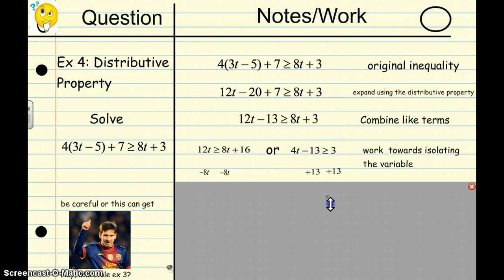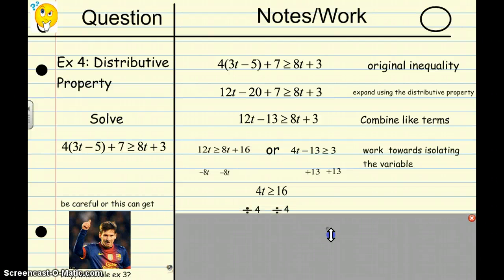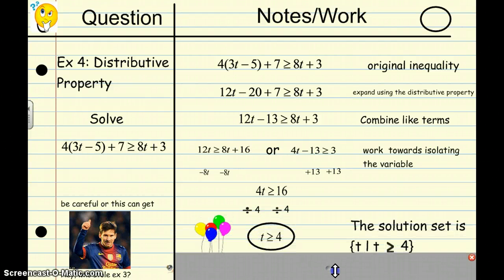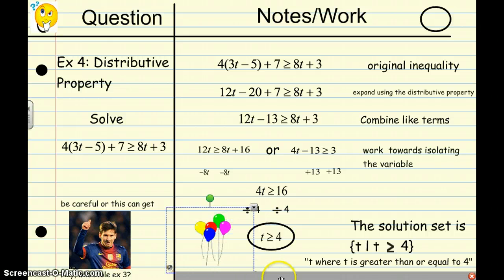Next. You are down to 4T is greater than or equal to 16. You must divide by 4 and you get T is greater or equal to 4. Some cheering please. Hooray! Thank you. The solution set is written as this: T where T is greater than or equal to 4. Solutions such as 4 will work. 5 will work. 6 will work. Negative 3 will not work. Do not have that as a solution.